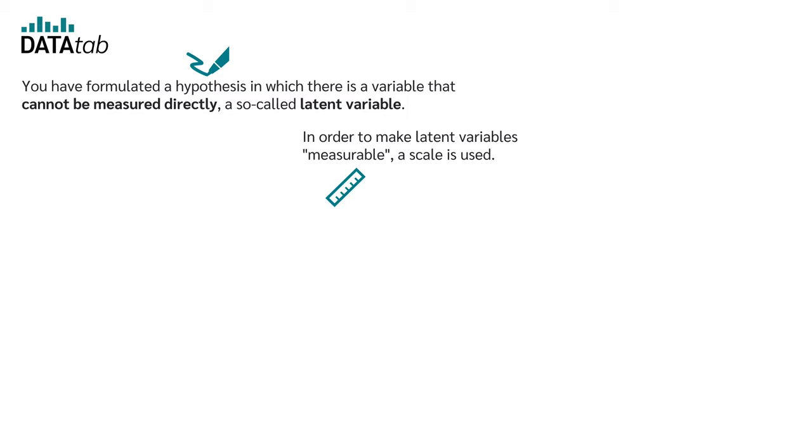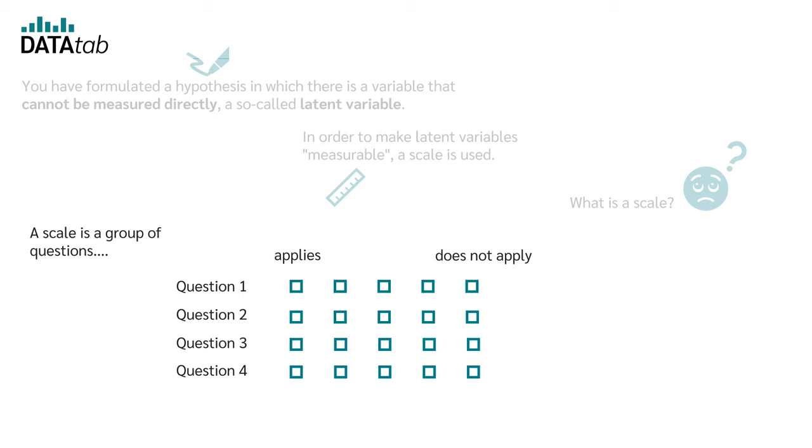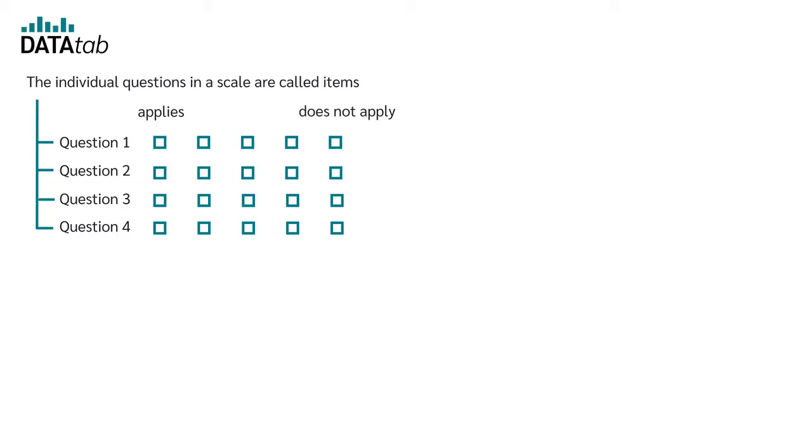So now what is a scale? A scale is a group of questions, for example question 1 to question 4, which are used to jointly measure a latent variable. The individual questions in a scale are called items.